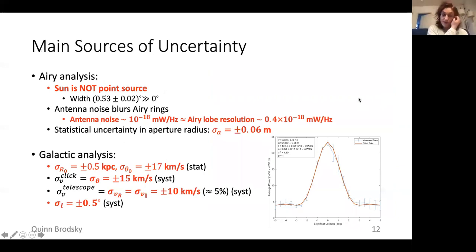We have to think about some sources of uncertainty here. For the antenna response analysis, the main source of uncertainty is in our assumption that the sun is a point source and the fact that we were limited in taking high statistics because it's cloudy all the time in Boston. There's a lot of uncertainty with the assumption that the sun is a point source because the angular width of the sun is about half a degree, which is clearly not a zero dimensional point source. When we have the analytical form of the airy function, we know that they have those very characteristic airy lobes, which we should be able to see in our plot here, but we don't see this. The reason for that is because the antenna noise and the thermal noise around the dish contributes an uncertainty on the order of about 10 to the minus 18 megawatts per hertz, which also happens to be the same order of the resolution of the airy lobes, which means that the antenna noise is going to blur out our airy lobes, so we're not going to see them.